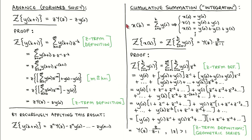Let's now look at the cumulative summation property of the Z-Transform. It says that if a signal X is defined as the cumulative sum of another signal Y, then the Z-Transform of X is equal to the Z-Transform of Y times Z divided by Z minus one. For each value of the time index K, the value of signal X is the sum of all the values of signal Y from time index zero up to and including time index K. This means X of zero equals Y of zero, X of one equals Y of zero plus Y of one, X of two equals Y of zero plus Y of one plus Y of two, etc. It is useful to think of signal X as the discrete integration of signal Y.